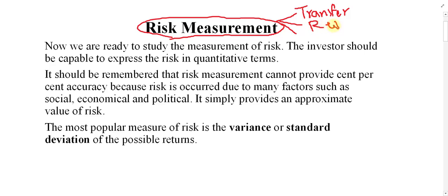The second way of managing risk is rejecting the risk. When you feel there is a huge risk in a business, you may directly reject it — you don't want to start that venture at all. The third way is accepting the risk. Unless you accept some risk, you definitely cannot make profits. It depends on the level of risk tolerance of each investor. If you expect more return, you have to accept more risk.